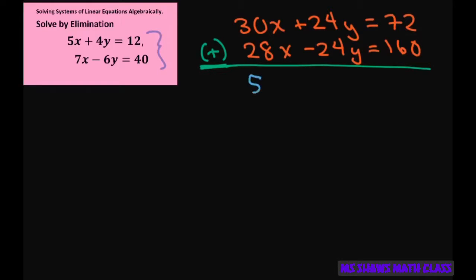So this is 58X. The zero property zeros that out, and this is going to be 2, 13, 232. And 232 divided by 58 equals 4. So your X is 4.